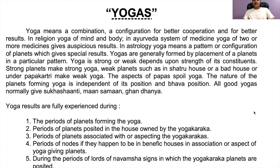Results also come during periods of planets associated with or aspecting the yoga karakas — for example, if the fifth house lord and the tenth house lord are aspecting or conjunct each other. Additionally, results come during the period of Rahu or Ketu if they happen to be in a benefic house, in association or aspect with yoga planets. If Rahu or Ketu is conjunct with a yoga karaka planet in a Kendra or Trikona house, during that planet's Mahadasha results will manifest.